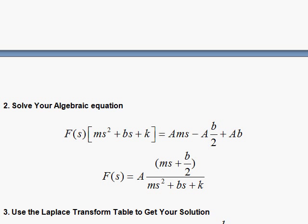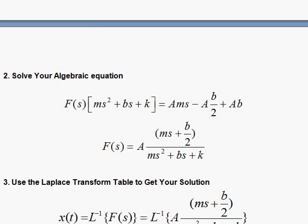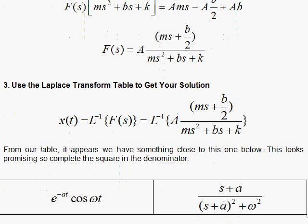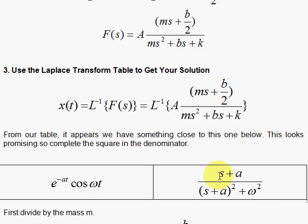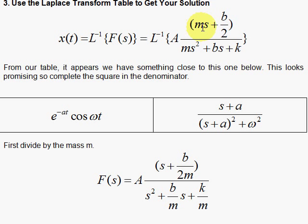Step three: take the inverse Laplace transform by use of the table. Use the Laplace transform table to get your solution; I need the inverse Laplace transform of this. When I cruise the tables, I see something promising: I have an s — I'm going to factor out the m in just a second — so I'll have an s and then a constant; I have an s squared and an s, which gives s squared and some s power and then other stuff. Let's first divide by m to clean things up: divide top and bottom by m, so we have s plus b over 2m, and then s squared plus b over m times s plus k over m. And I see that I can complete the square down here.